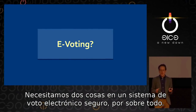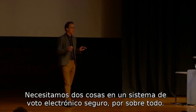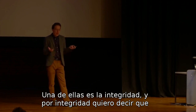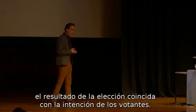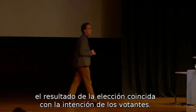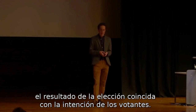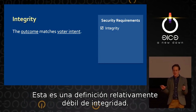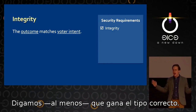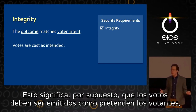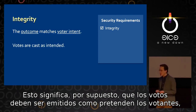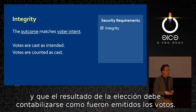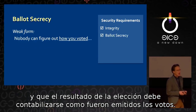We need two things in a secure e-voting system above all else. One of them is integrity, and by integrity I mean that the outcome of the election matches the voters' intent. This is a relatively weak definition of integrity — let's just at least say that the right candidate wins. This means that votes have to be cast as voters intended and that the election result has to be counted as the votes are cast.